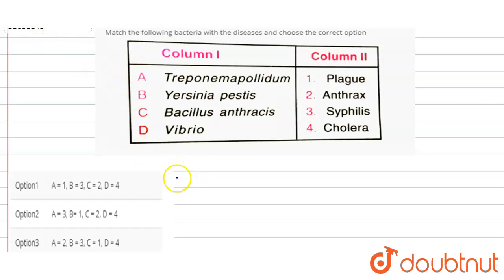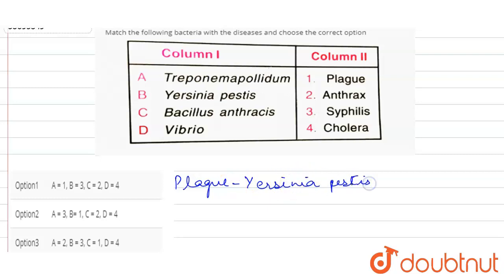What is the plague? It is an infectious disease which is caused by the bacteria called Yersinia pestis. These bacteria are found mainly in rodents, particularly in rats, and in the fleas that feed on them. Other animals and humans usually contract the bacteria from rodent or flea bites.